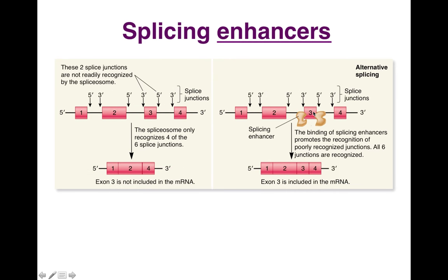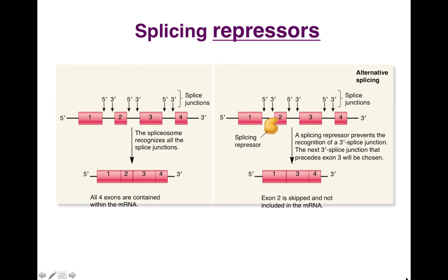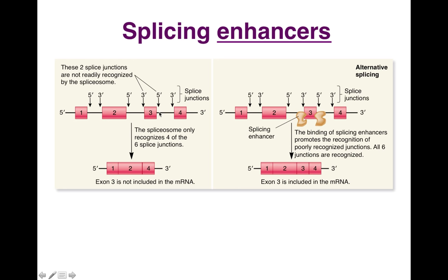Some splice sites require the presence of enhancers in order to be utilized. Without those enhancers, this exon will be removed because its splice sites are not strong enough to be recognized by the normal machinery on their own. The 5' splice site will normally splice out an intron with the downstream 3' splice site, producing messenger RNA with exons 1, 2, and 4 but not 3. If splice site enhancers are present, the flanking splice sites will be utilized, exon 3 will be retained, and the mature messenger RNA will contain exons 1, 2, 3, and 4.